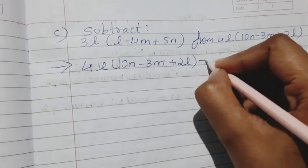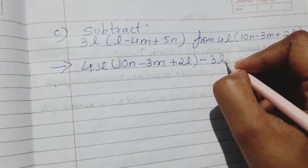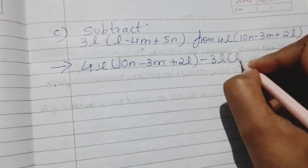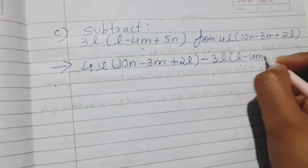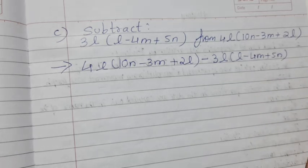And then put minus sign, then put 3l into this, which is 3l(l - 4m + 5n). Okay, then what I'll have to do over here is...